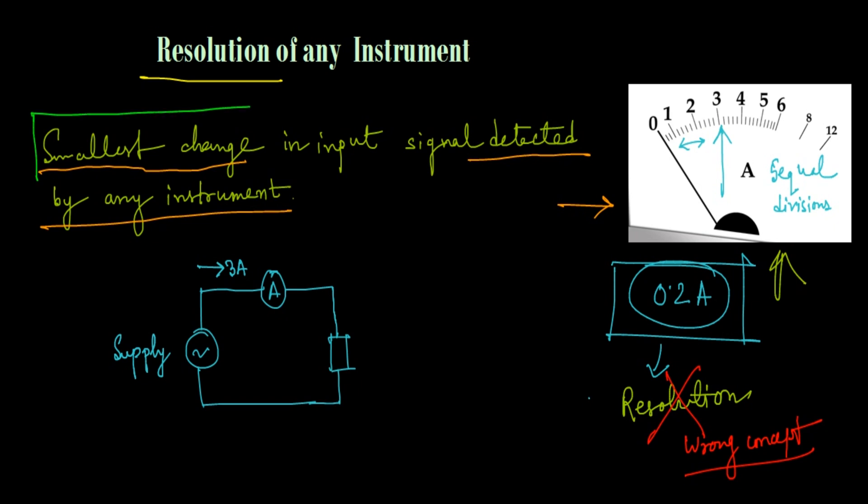Now the question is, what is the right concept? The definition says the smallest change, so if the ammeter can detect a change in input signal of suppose 0.1 ampere, then 0.1 ampere is the resolution. Suppose the ammeter can detect a change of 0.01 ampere, then 0.01 ampere is the resolution of this instrument.